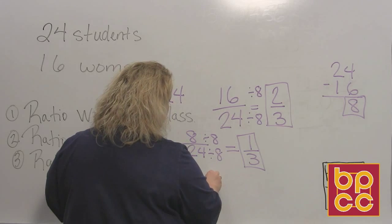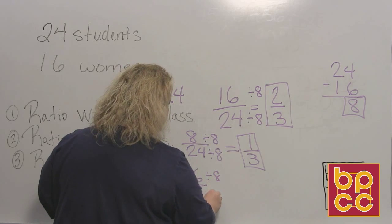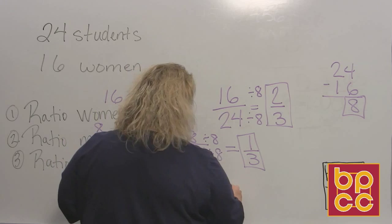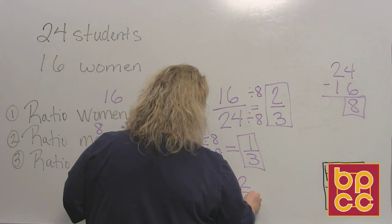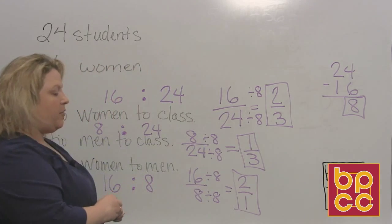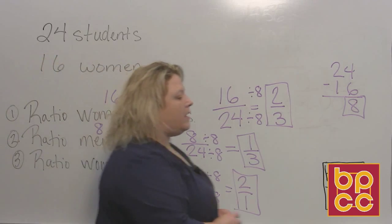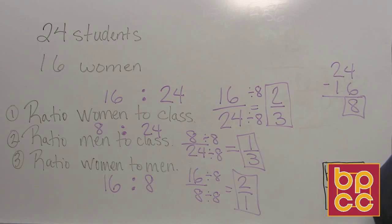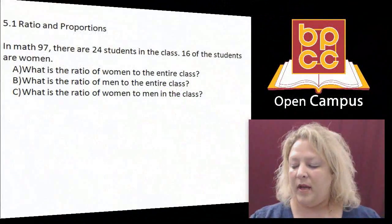We know that 8 divides into both of these. So when I divide by 8, I get 2 to 1. So that means for every 2 women in the class, 1 of them are men. Okay, and that is dealing with ratios. Now let's go back to the screen.